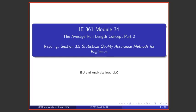Welcome to Module 34 in this series of lectures on Statistical Quality Assurance and Statistical Process Improvement. This is the second part of the discussion of the so-called average run length concept.